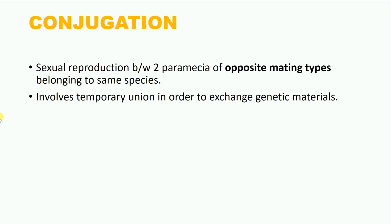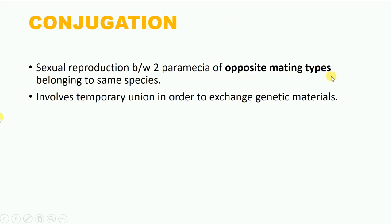The first method is conjugation, which is a sexual reproduction between two paramecia of opposite mating types belonging to the same species. So the two individuals participating in the conjugation process must belong to the same species — say either paramecium caudatum or paramecium aurelia. However, they have to be of opposite mating types. Each species has two mating types which differ on the basis of the chemical characteristics of their cell membrane, and that is what we mean by opposite mating types.